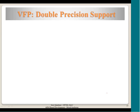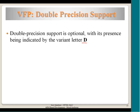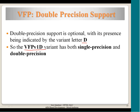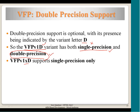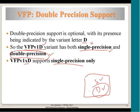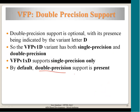When double precision is supported, single precision is also implicitly supported. If there is no 'D' in the version name, only single precision is supported. Double precision requires more complex processing elements, whereas single precision has a lesser data width and lower complexity. Most arithmetic instructions support both, and the instruction format encodes the precision. Double precision support is by default also present when the D variant is used.